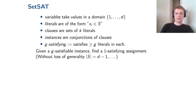The problem is: given a g-satisfiable instance, find at least a 1-satisfying assignment. In these problems you could vary some definitions — for example, instead of a 1-satisfying assignment you could ask for a c-satisfying assignment for some constant c.